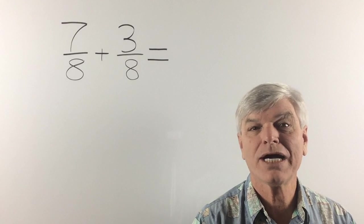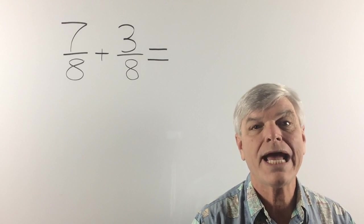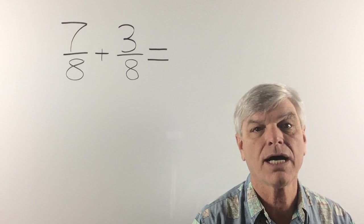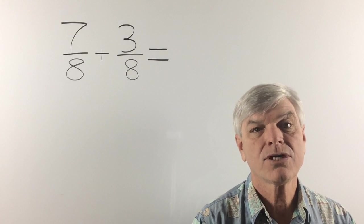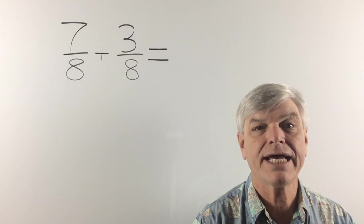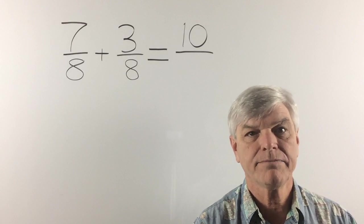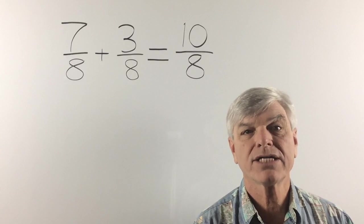Okay, let's try a little addition and subtraction. Now with addition and subtraction, we add the numerators or subtract the numerators across. But the denominators stay the same. So with this problem here, we have 7 plus 3 is 10. And like I said, the denominator remains the same. So we have 10 over 8, which is an improper fraction.